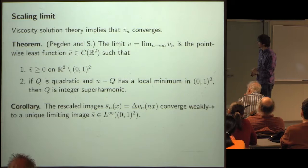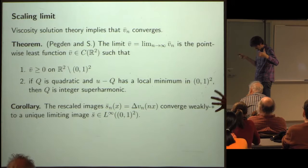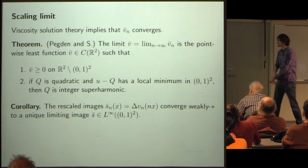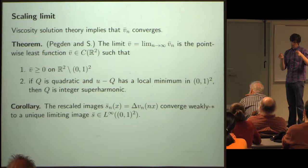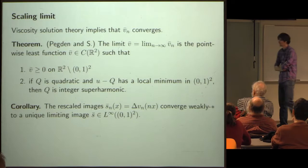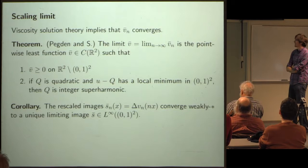With this definition you can capture the limit. In the limit, the object you're getting is the pointwise least function that is greater than or equal to zero outside the unit square, and inside the unit square, at any place the function is twice differentiable, the second-order Taylor expansion is integer superharmonic — stated precisely using viscosity solution language.